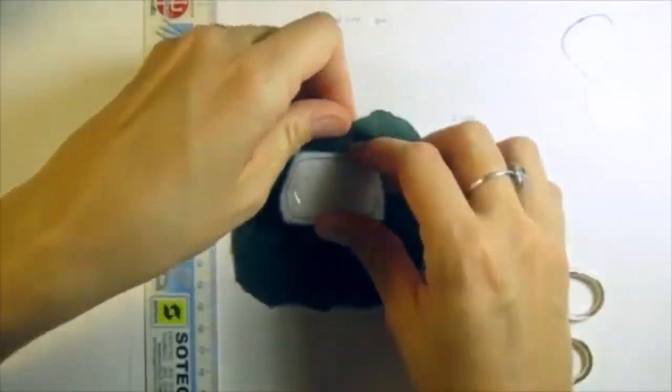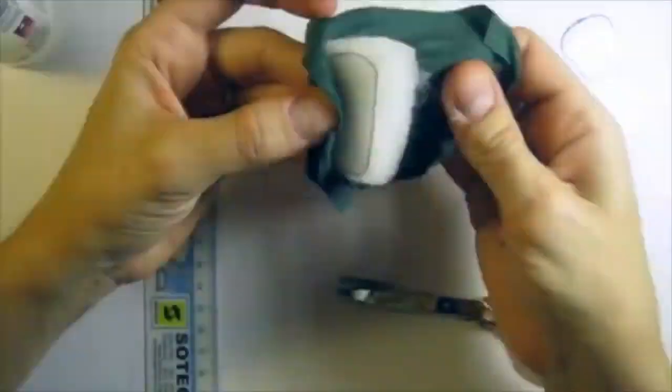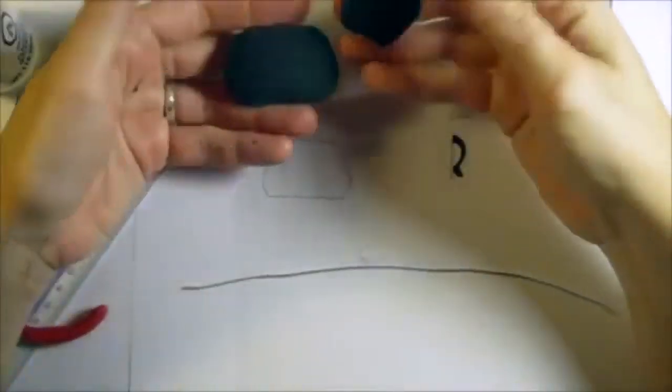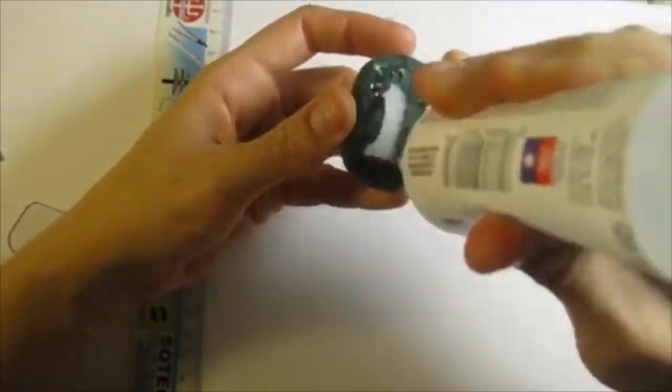Carefully cover the cushions with a stretchy cloth. Glue the other plastic piece on the back.